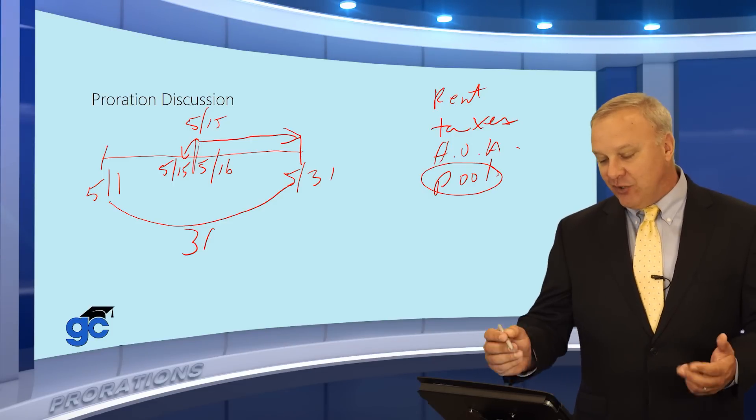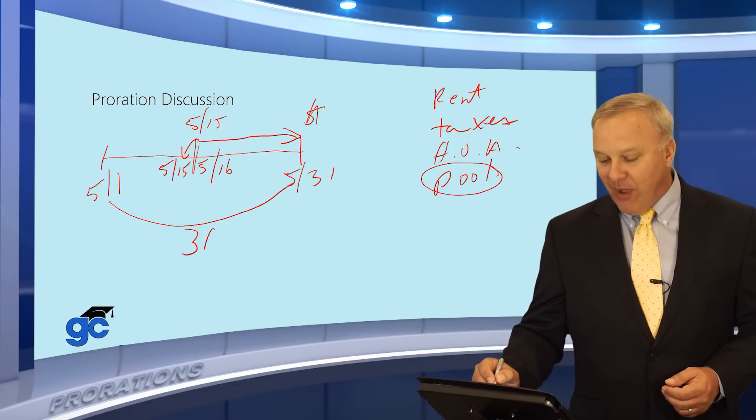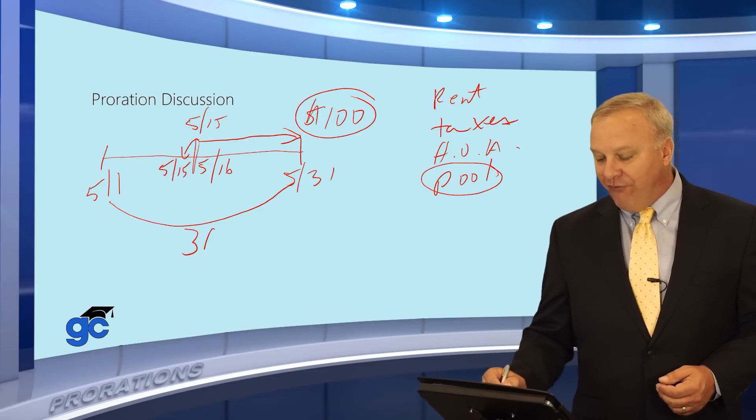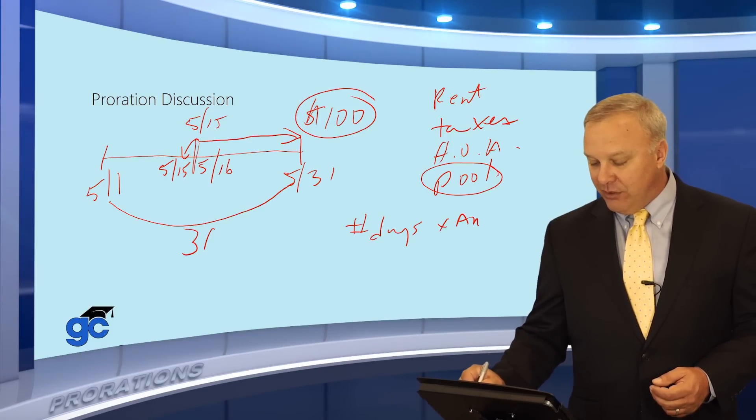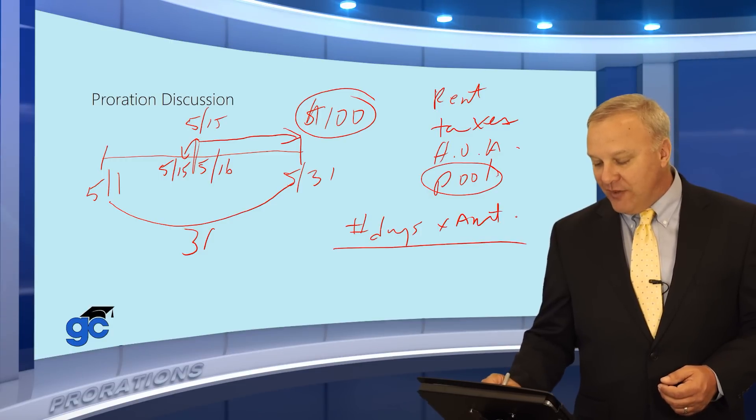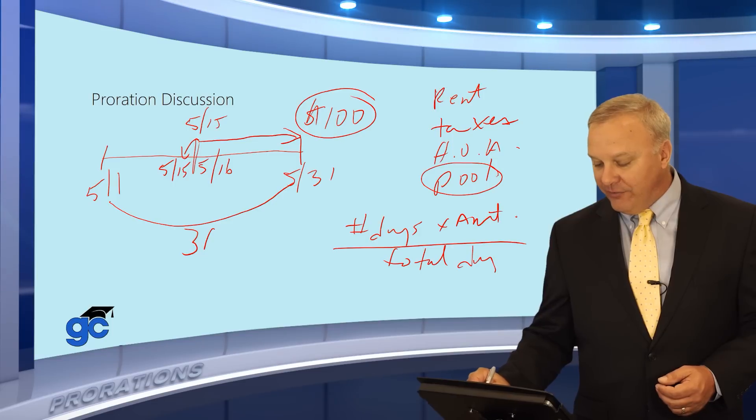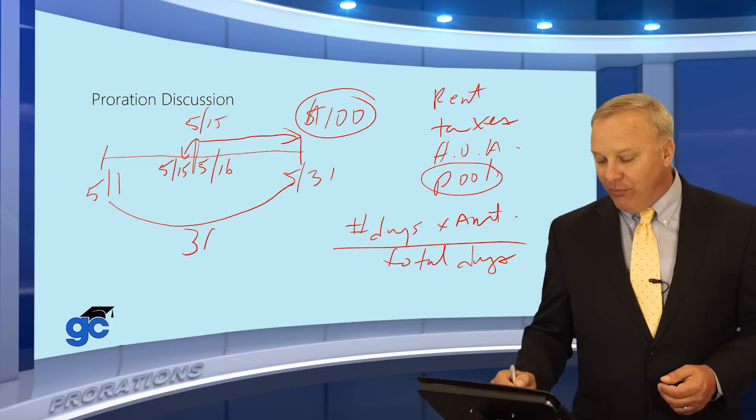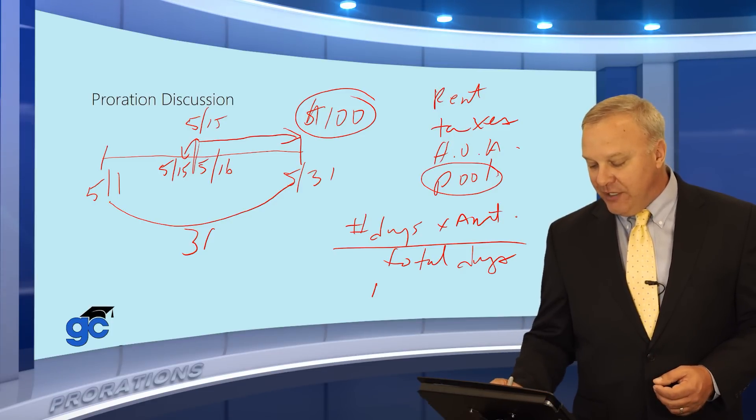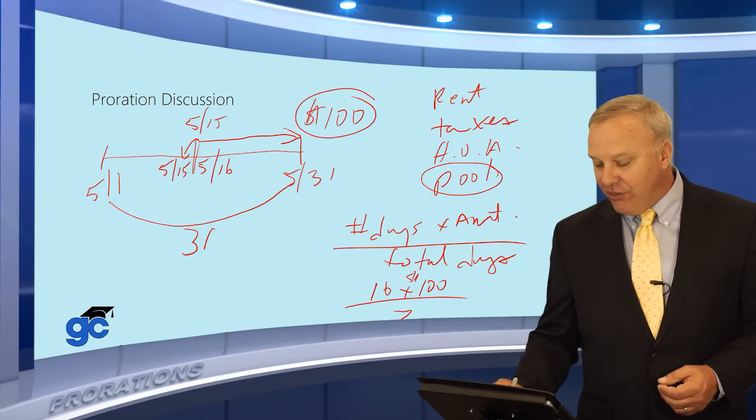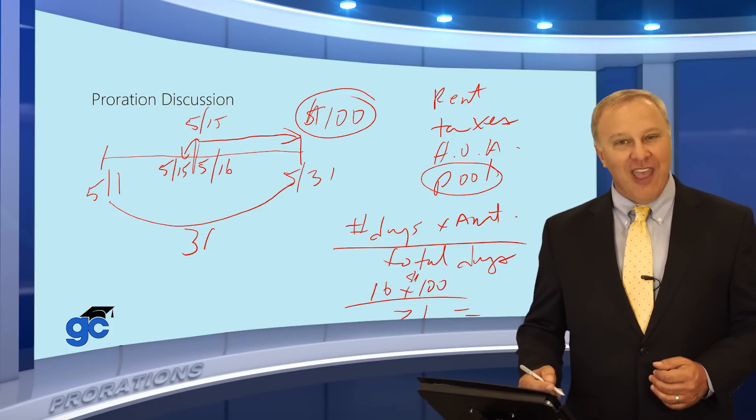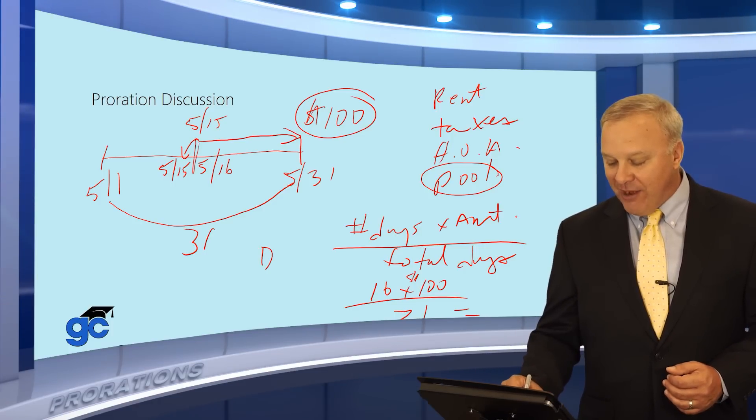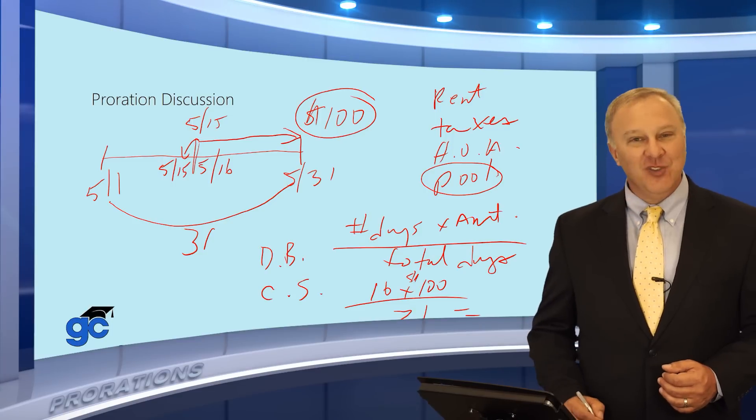The formula for solving this, let's just say for argument's sake, that the amount of money that was paid for pool maintenance here was $100. The formula is going to be your number of days times the amount divided by total days, which in this case is 31. So to calculate this, you would simply take the number of days on the buyer's side, which is 16 times $100 and divide that by 31 days. Whatever that comes to, that would be a debit to the buyer because the buyer will be charged that amount and a credit to the seller.